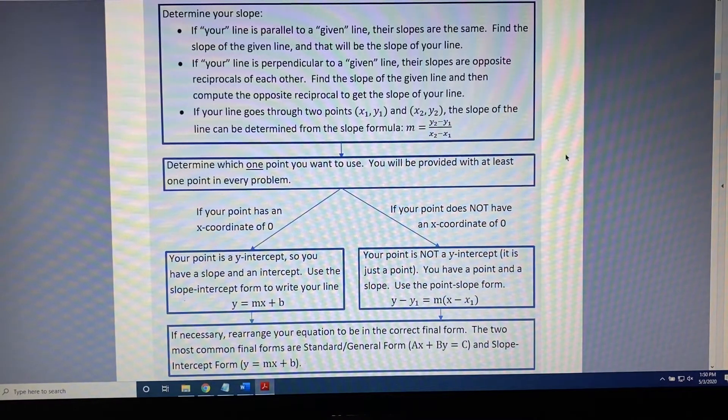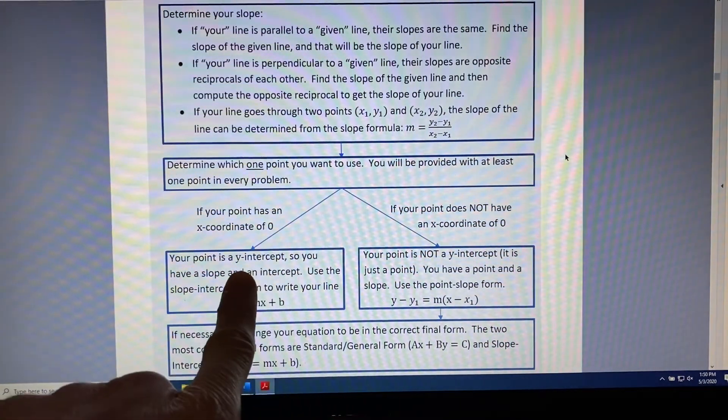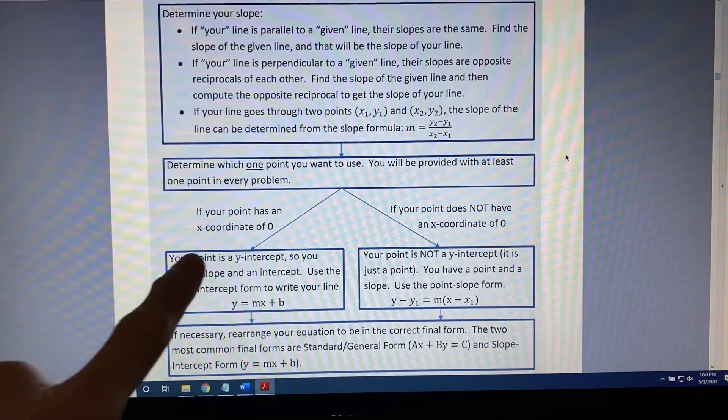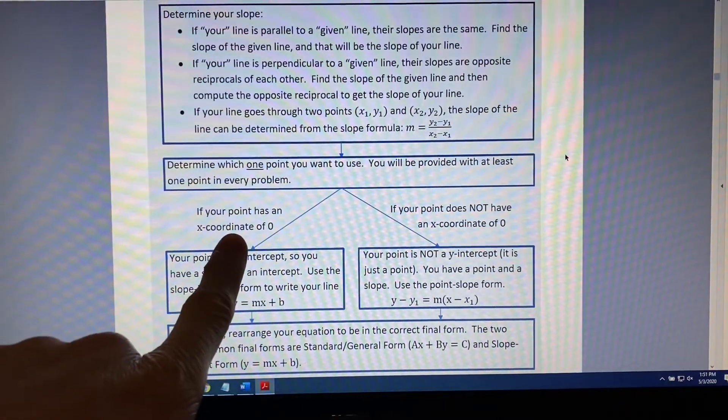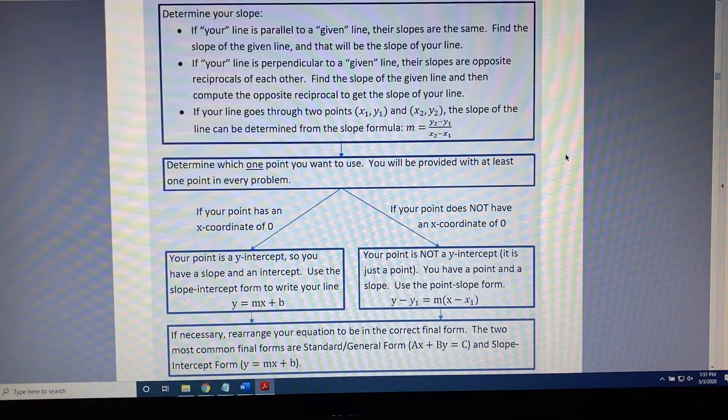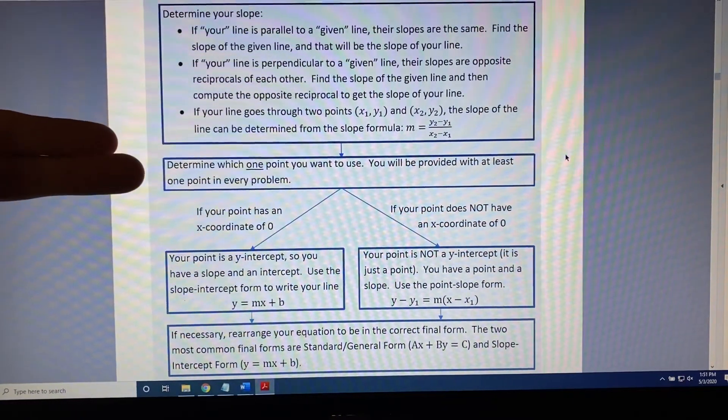I'll tell you right now that when you are looking at the left and right paths that are coming up soon, the left path is the easier path. So, if you ever have a choice, pick the point with the x-coordinate of zero. Now we have our slope and our point.